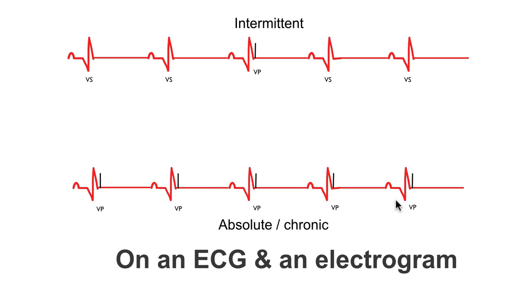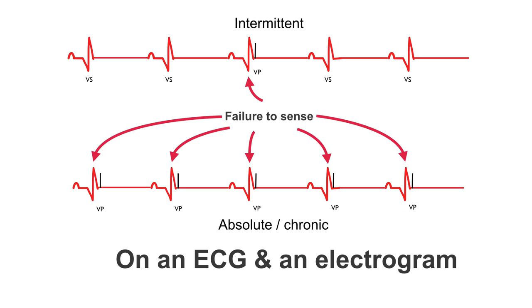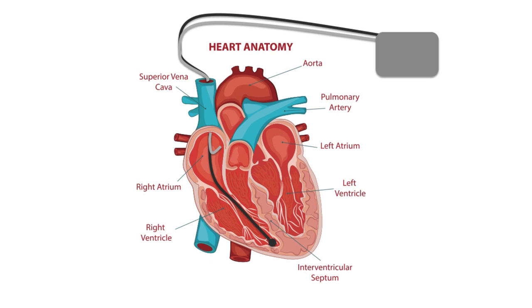This happens on all of the heartbeats on this electrogram, and so we would say that this is permanent, absolute, chronic under-sensing. I've marked all the events where the pacemaker fails to sense on the electrograms.